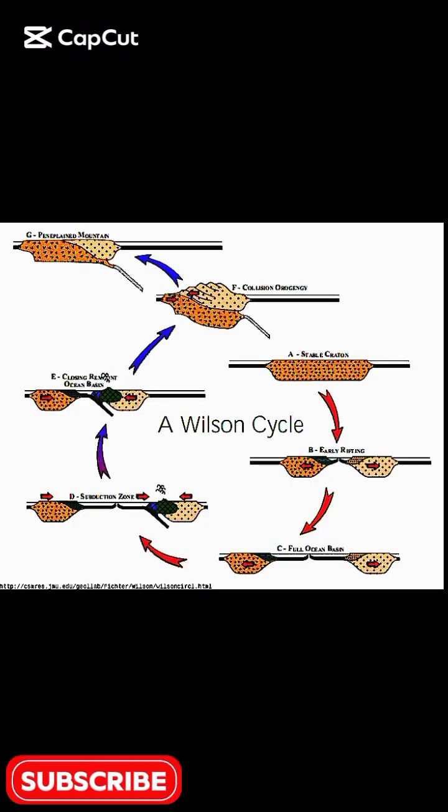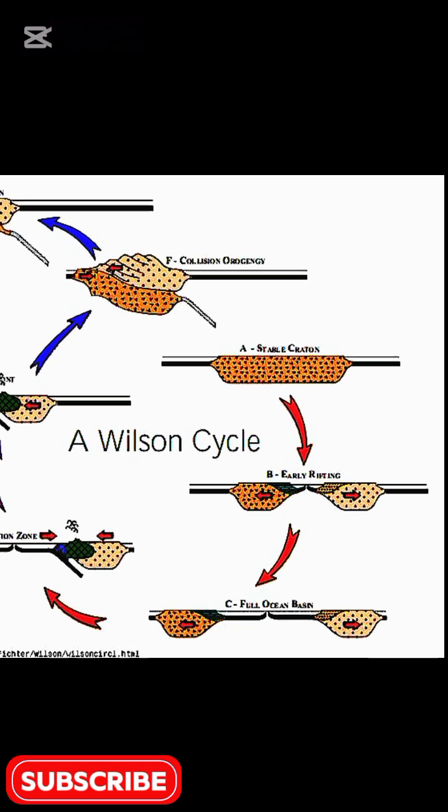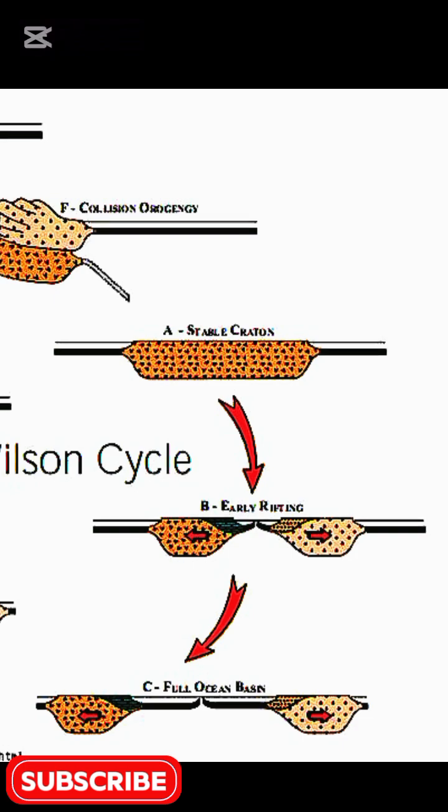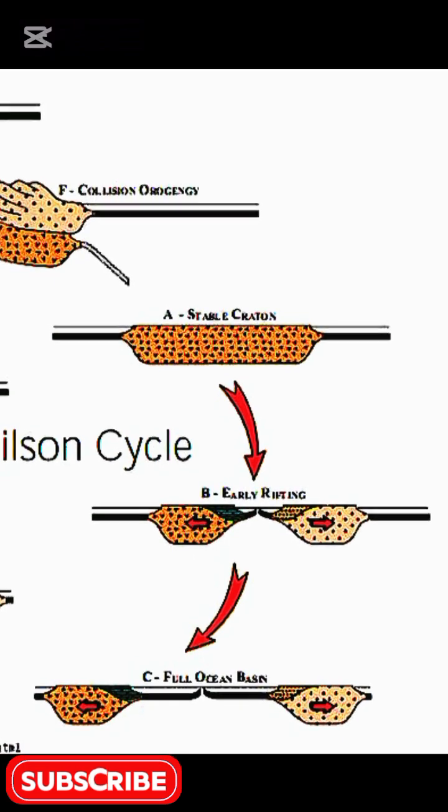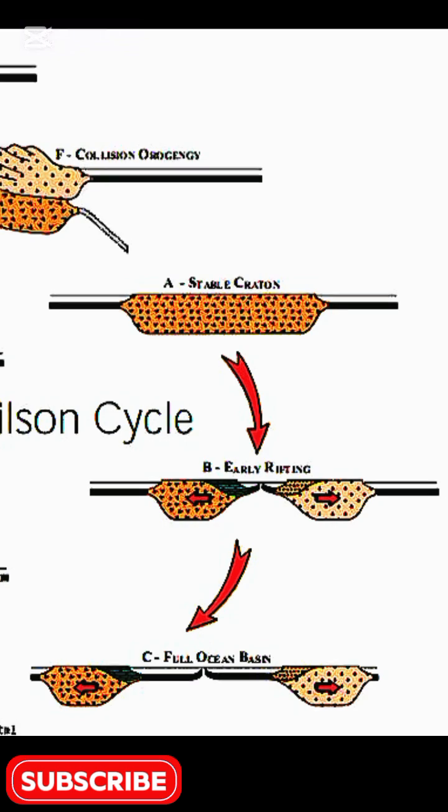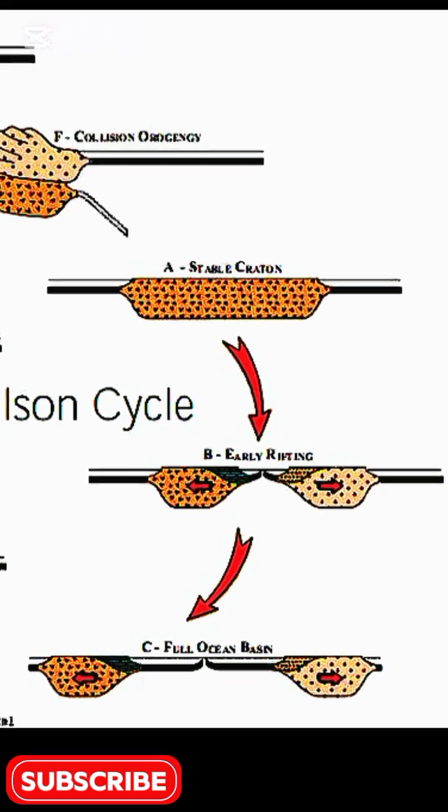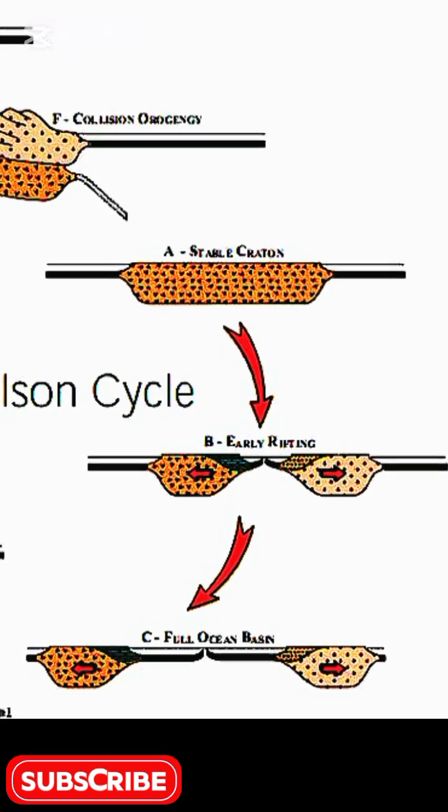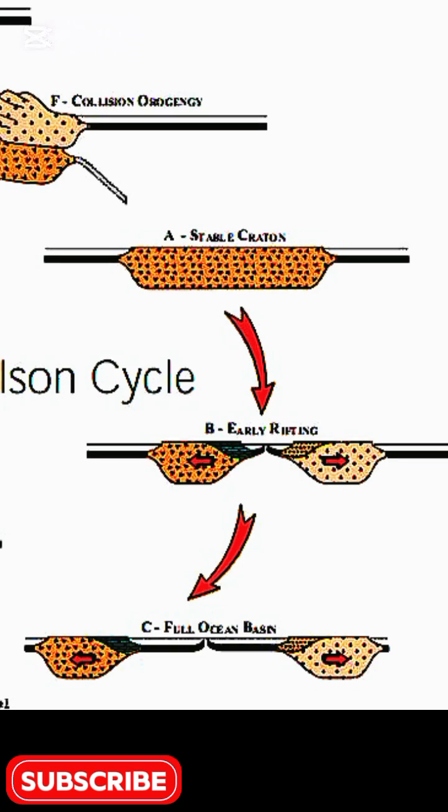The Wilson Cycle is like Earth's heartbeat. Continents split, oceans form, and mountains rise in a grand slow-motion dance. If you look at a stage, a stable craton is here—a calm, ancient continental core like the Canadian Shield, where rocks are billions of years old and stable.